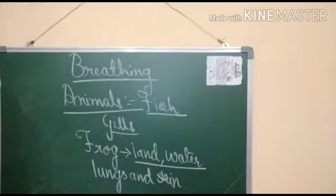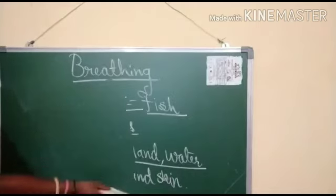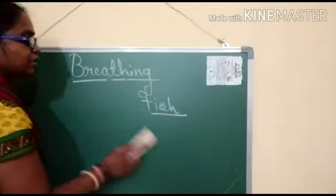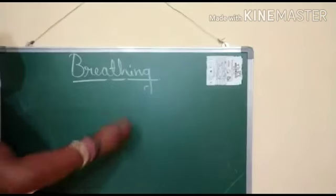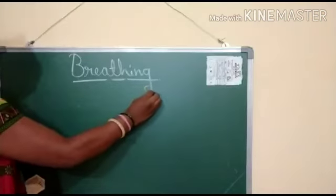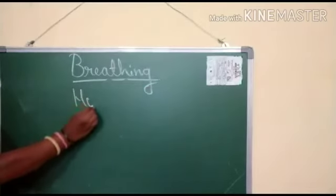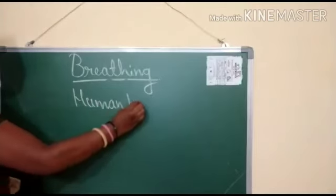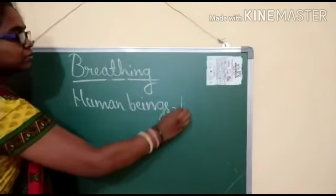Now we will see the next animal — we ourselves. We also come under the category of animals. We are human beings, and the breathing organ in human beings is lungs. Lungs are the breathing organ in human beings.